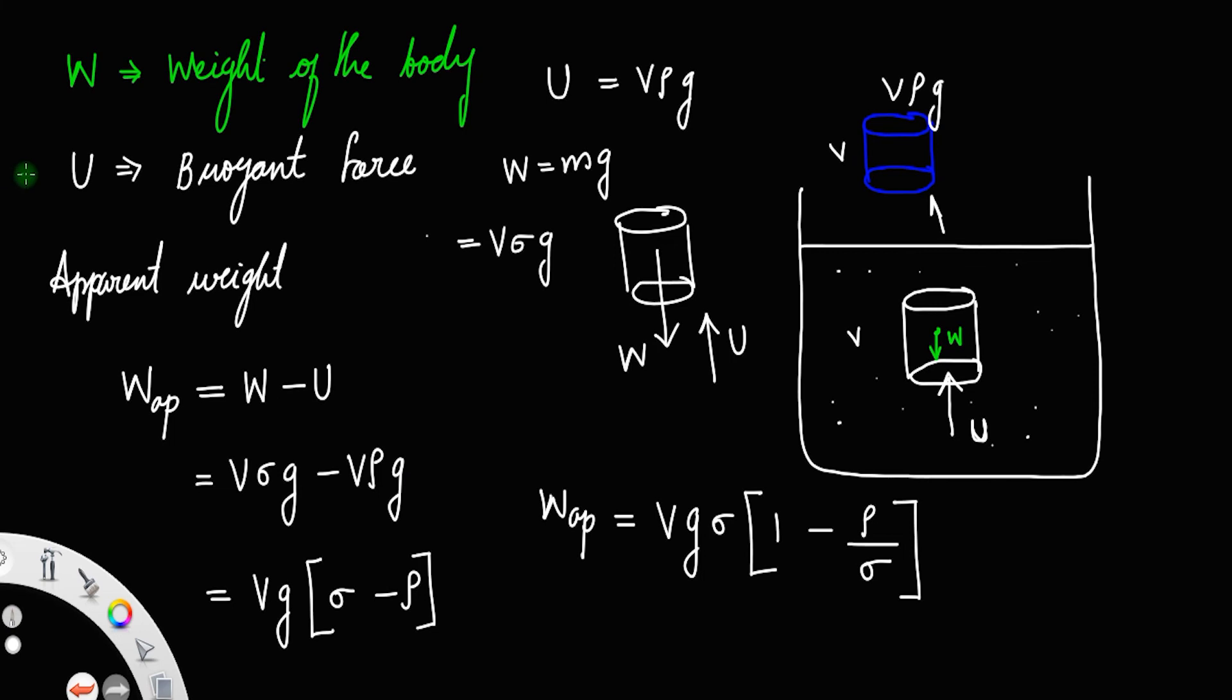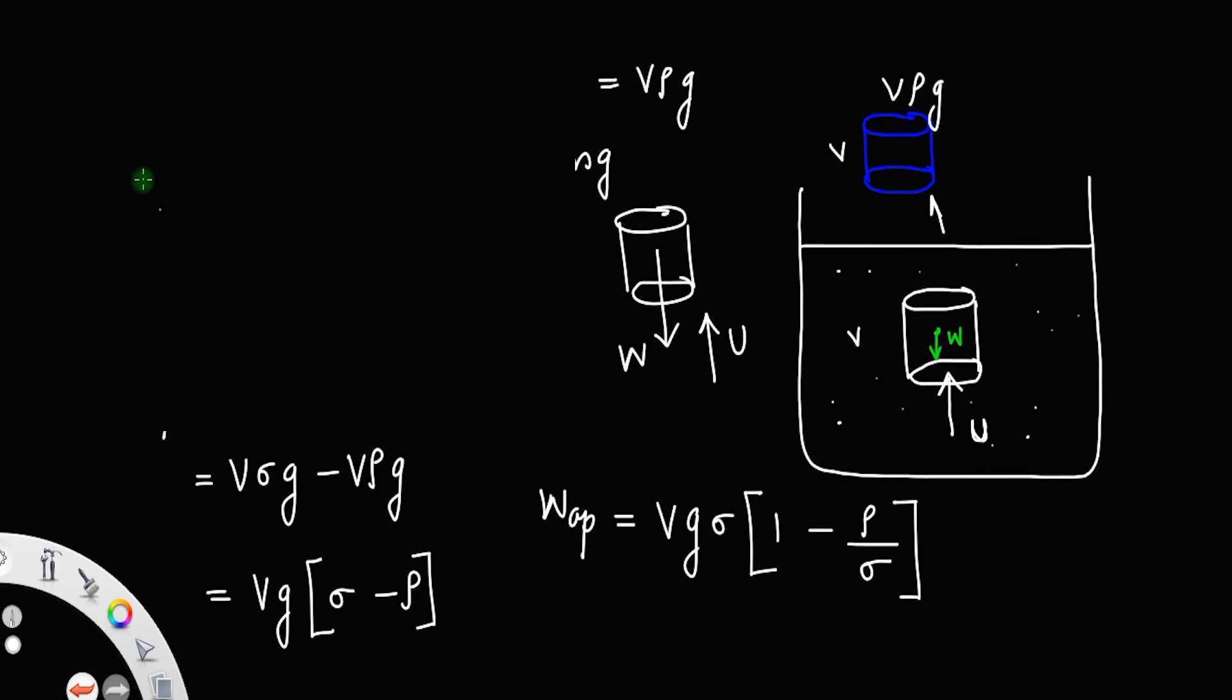And now the apparent weight W_ap is equal to—we know V times g times sigma, or V sigma g, is the weight of the body W—so W_ap equals W times 1 minus rho by sigma. This is the expression for apparent weight of the body.